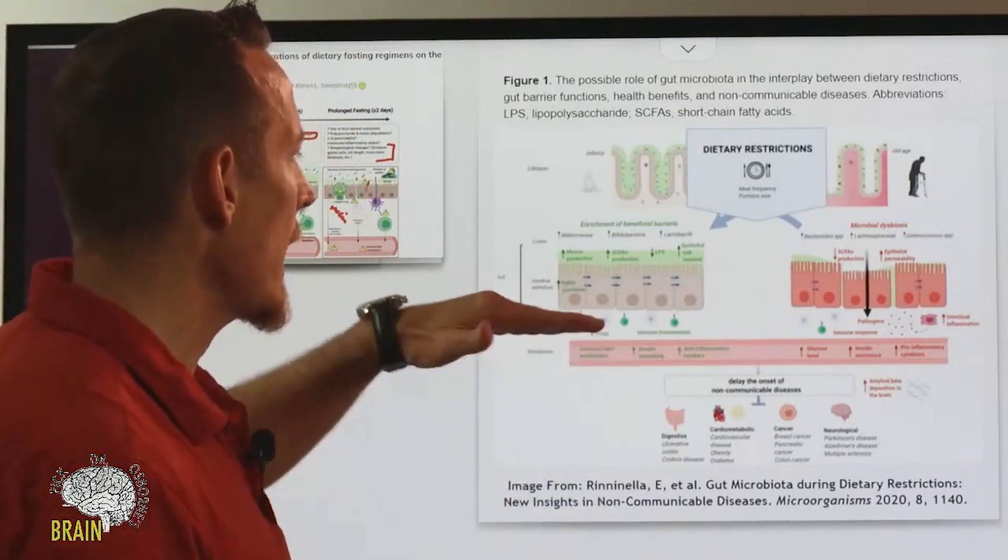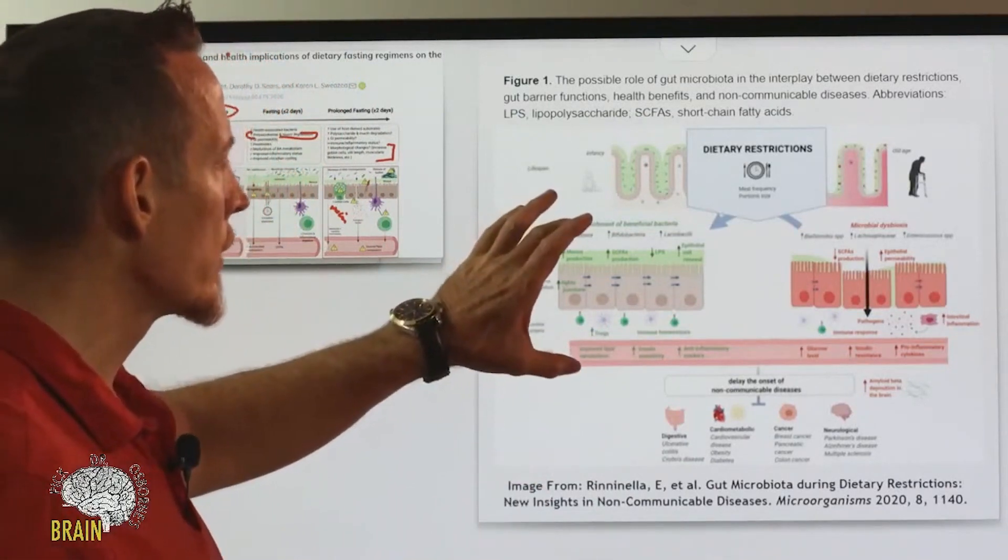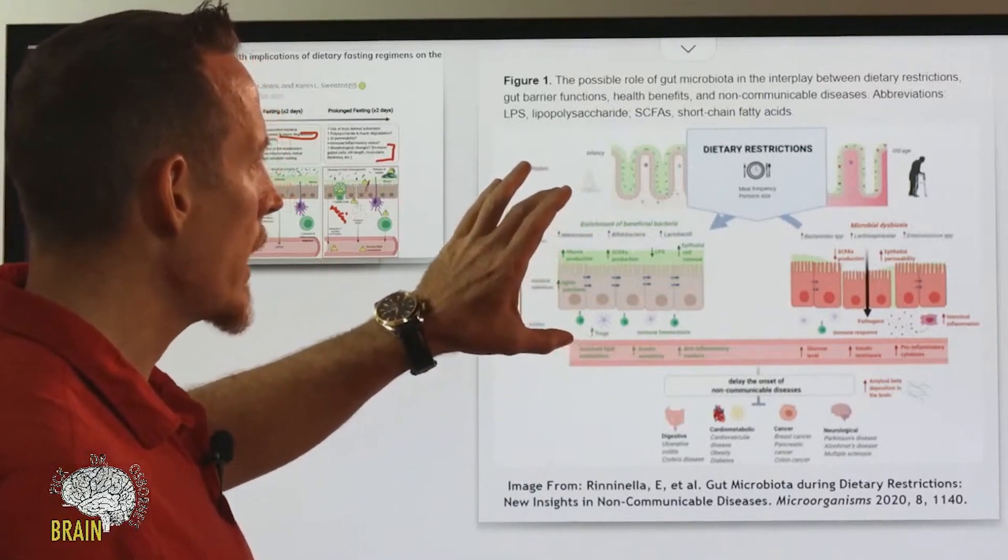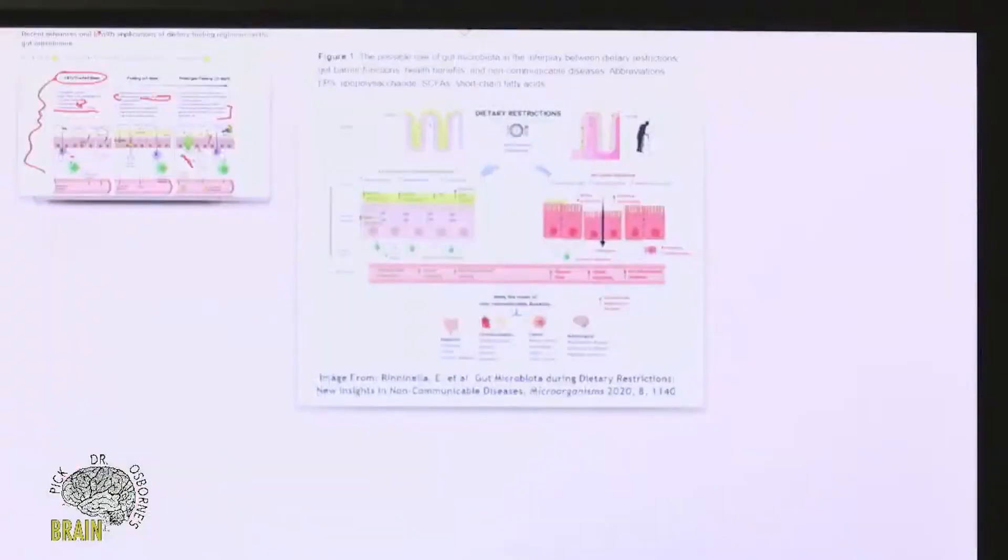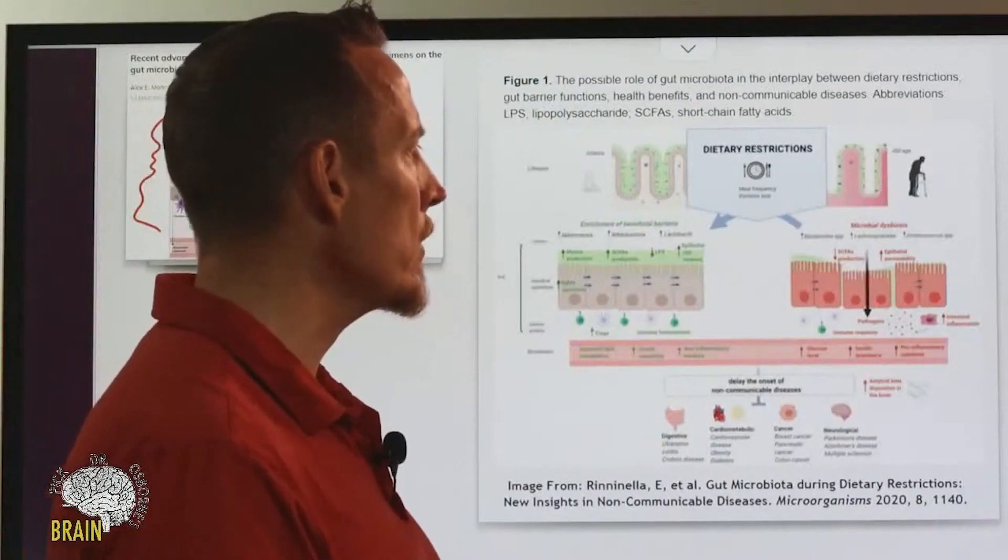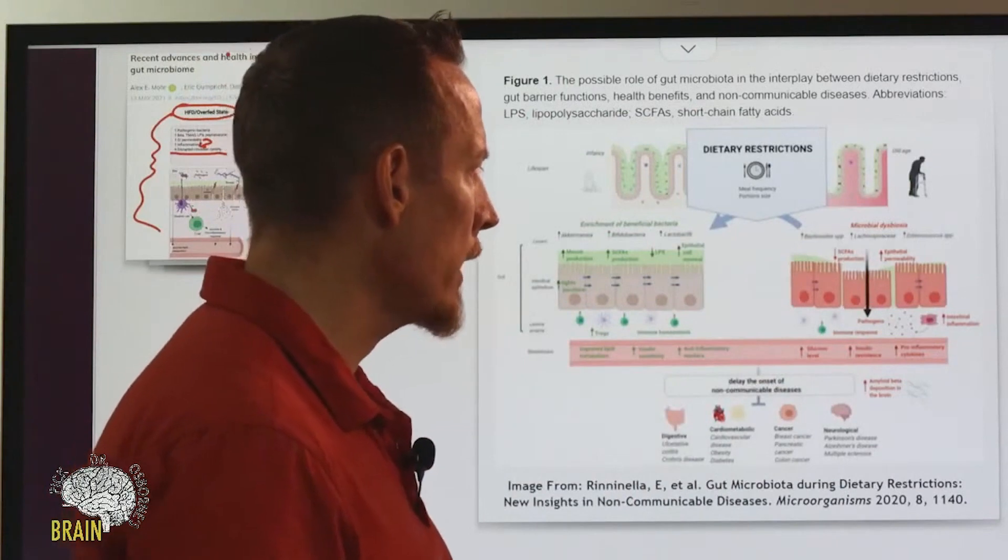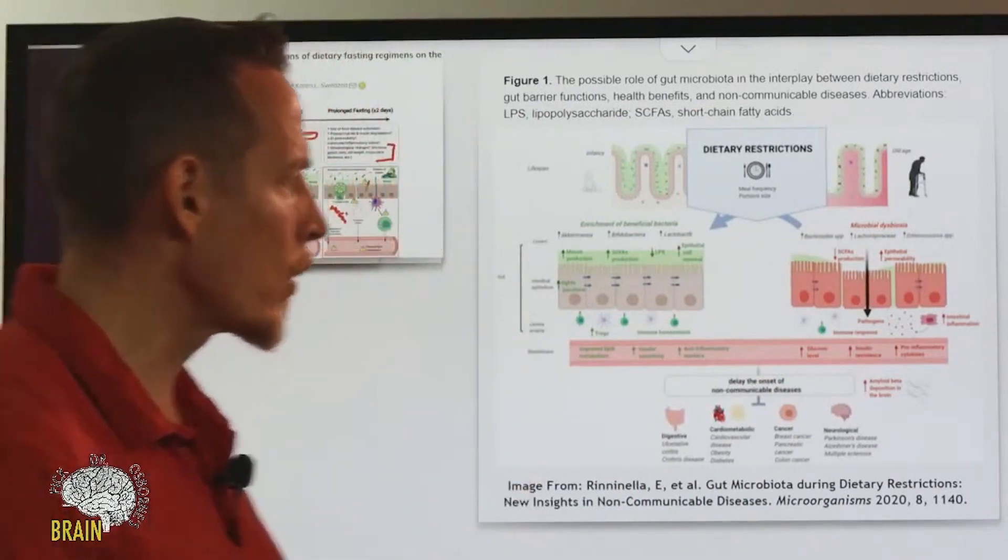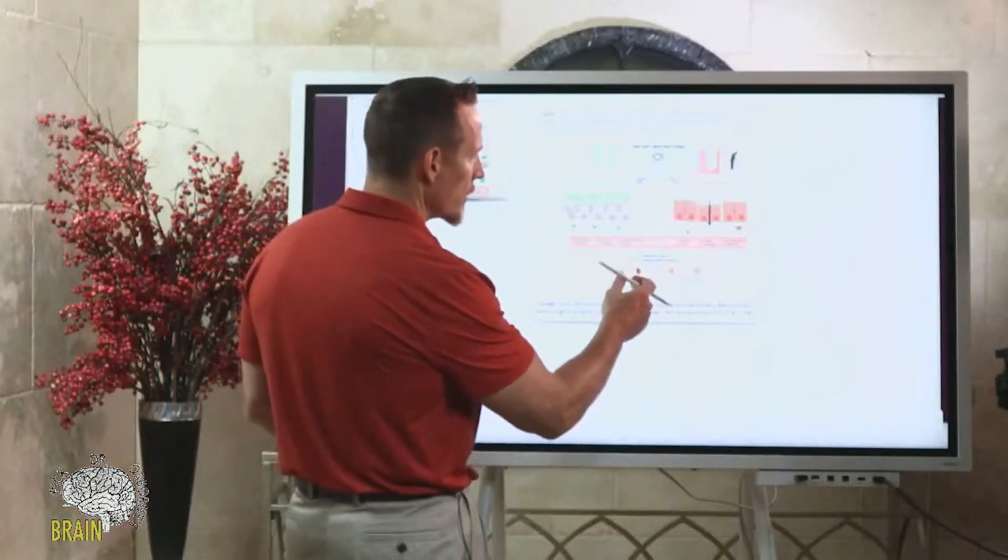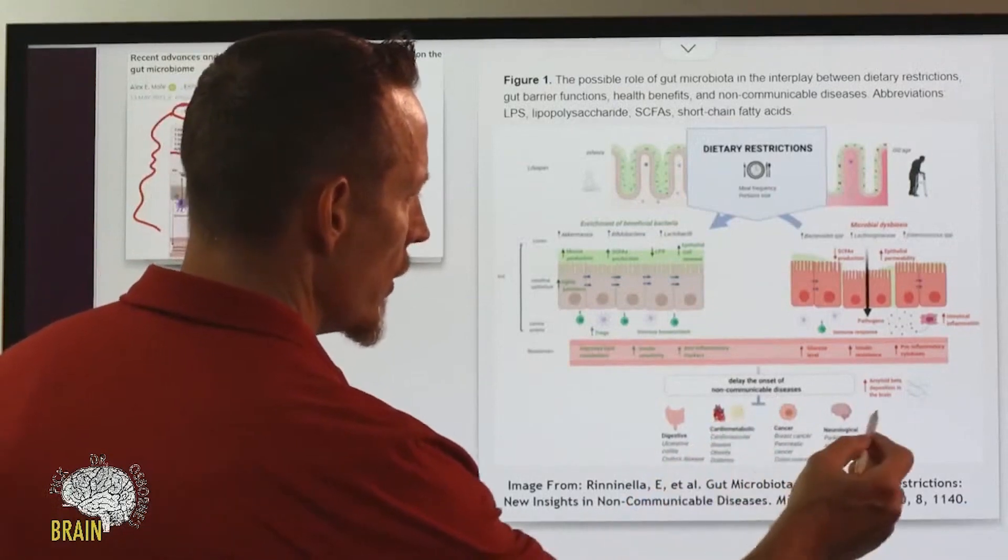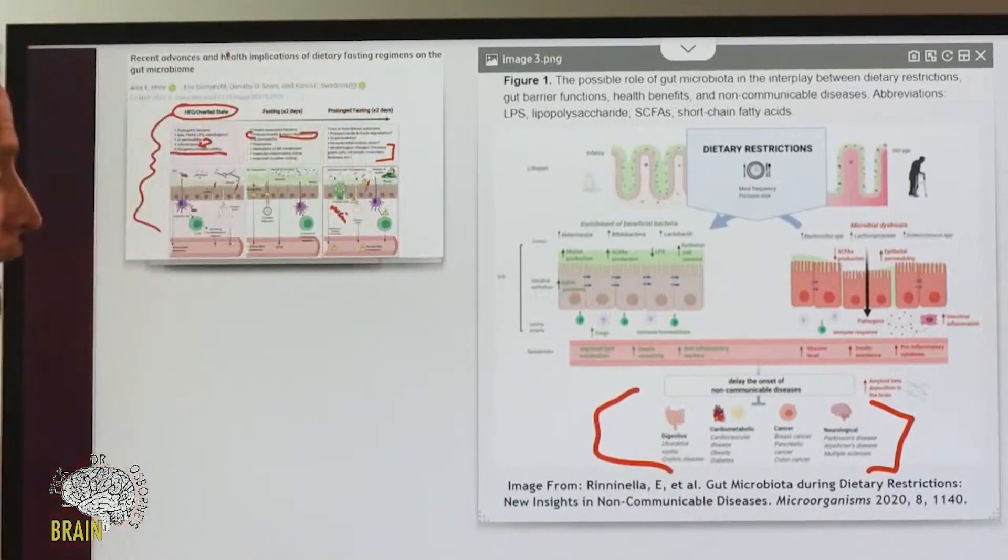We know that it helps to regulate how your T-cells respond to different things when you fast. There are a lot of benefits again to fasting just within the GI tract. Over here, if you're over-consuming food, we have an increase in Bacteroides and other types of pathological or pathogenic species. We have reduced short chain fatty acid production, increased permeability of the gut lining, which increases blood sugar, increases insulin, increases cortisol, and increases chronic inflammation. You can see the delayed onset of diseases down here.